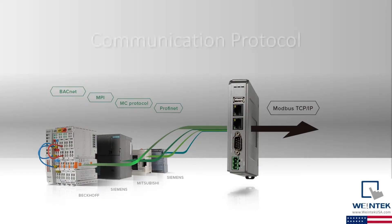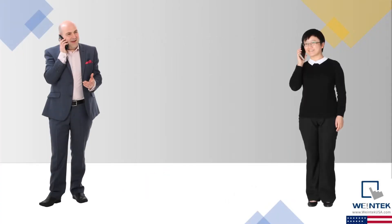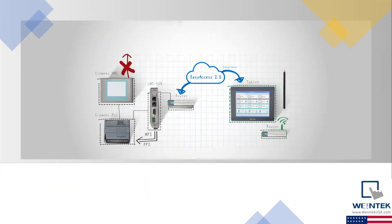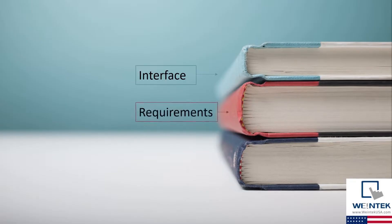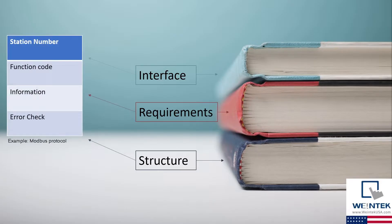Today, we're going to talk about communication protocols — what they are and how they work in industrial automation. Just like you or I need a common language to communicate, different devices on an industrial network do as well. This language is called a protocol. The protocol specifies the requirements or format that each device must conform to during communication, and an industrial device then uses these requirements to form a well-structured message.